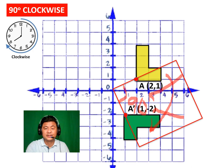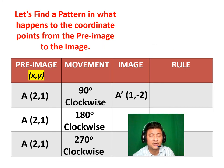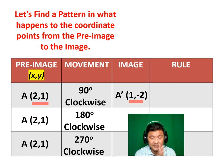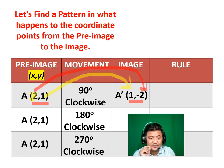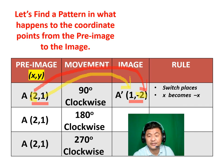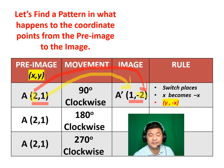Our new coordinates will be A prime (1, negative 2). So 2 comma 1 became (1, negative 2). Think of a rule — what happened to the numbers? They switched places. The X went over there, and the Y became the first number. They switched places, but the original X becomes a negative. So let's write it down: they switched places, and the original X becomes negative X. The mapping symbol for that is going to be (Y, negative X). Remember that — 90-degree clockwise.